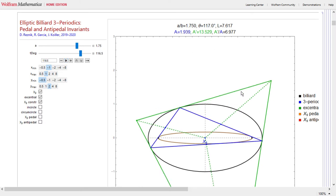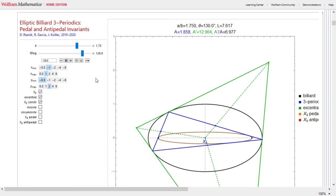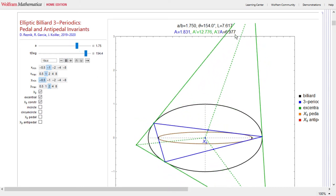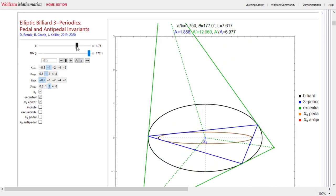You can also notice that the area of the extent triangle, denoted by A prime, divided by the area of the triangle of the three-periodic is invariant. You see it's invariant there at 6.977.